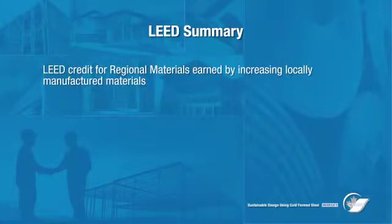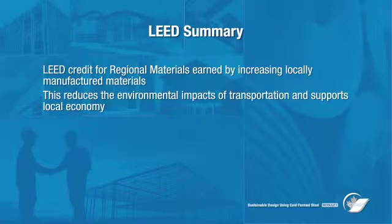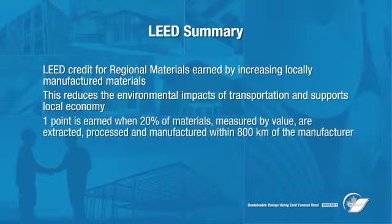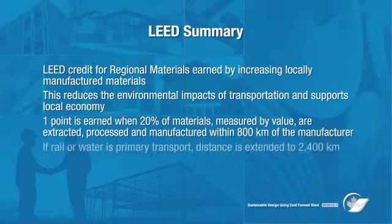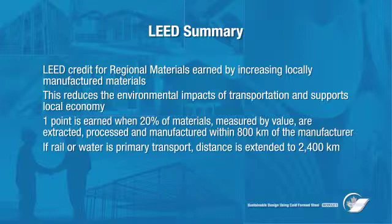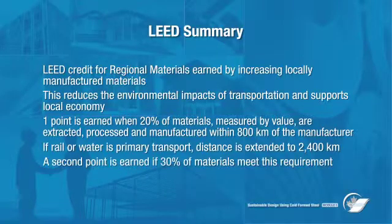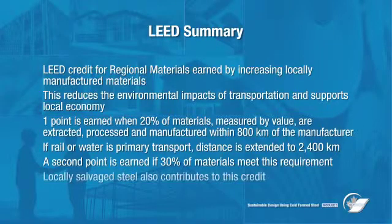The LEED credit for regional materials is earned by increasing locally manufactured materials, which reduces the environmental impacts of transportation while supporting the local economy. To achieve one point, 20% of materials measured by value must be extracted, processed, and manufactured within 800 kilometers of the project. Or, if rail or water transport is used primarily, this distance is extended to 2,400 kilometers. For a second point, 30% of materials must meet this requirement. For salvaged steel, this will likely refer to where the material last served a useful purpose, so locally salvaged steel would contribute to this credit.